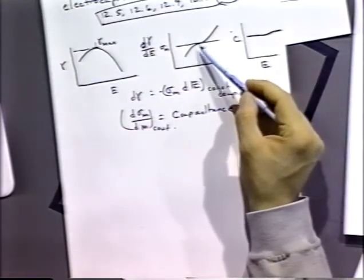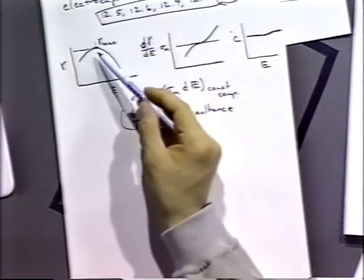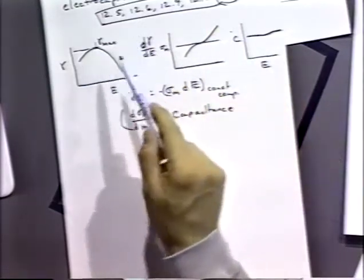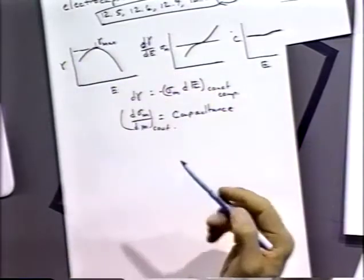So if we look at the capacitance, we can get the excess charge on the metal and then we can get the surface tension. So we can either do it with the normal dropping mercury electrode and get the capacitance, or we can measure the capacitance in another way and go back to get the surface tension.